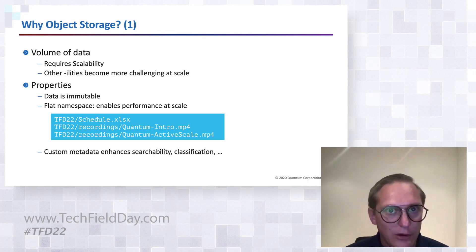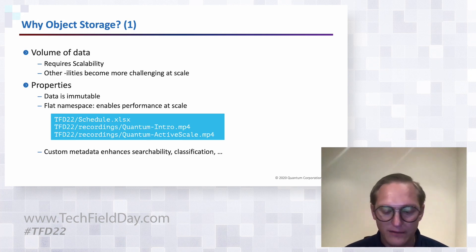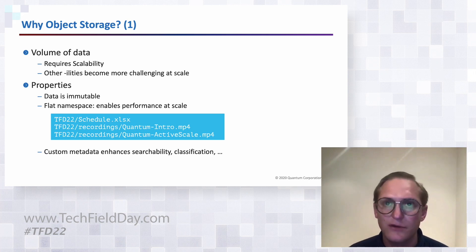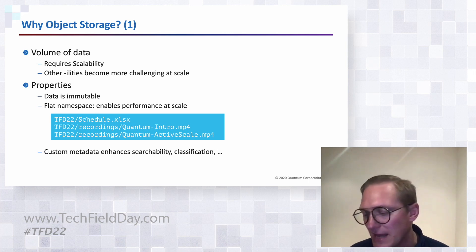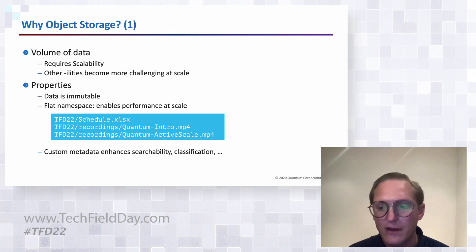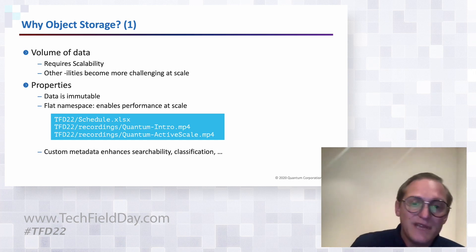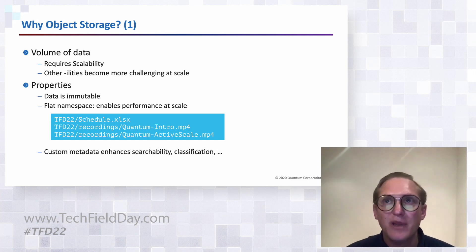An object also has custom metadata — up to two kilobytes per object of key-value pairs that can be uploaded together with the object data. This really enhances classification possibilities; data can be searchable, and as Sherman will show, outside systems can act on these key-value pairs to make rich applications.